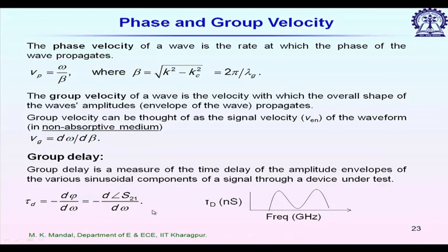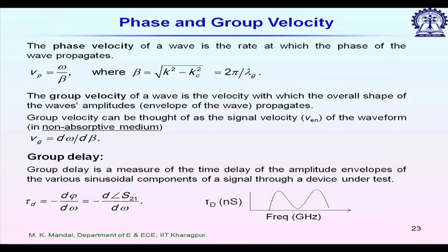Using a vector network analyzer, if we can measure the total angle from port one to port two, we can easily calculate the group delay value. For passive components, we typically see a concave type group delay profile: at mid-band frequency the group delay is minimum, and at the band edges on the left and right the group delay is maximum. All components have a finite bandwidth and cannot operate over the entire millimeter wave spectrum.